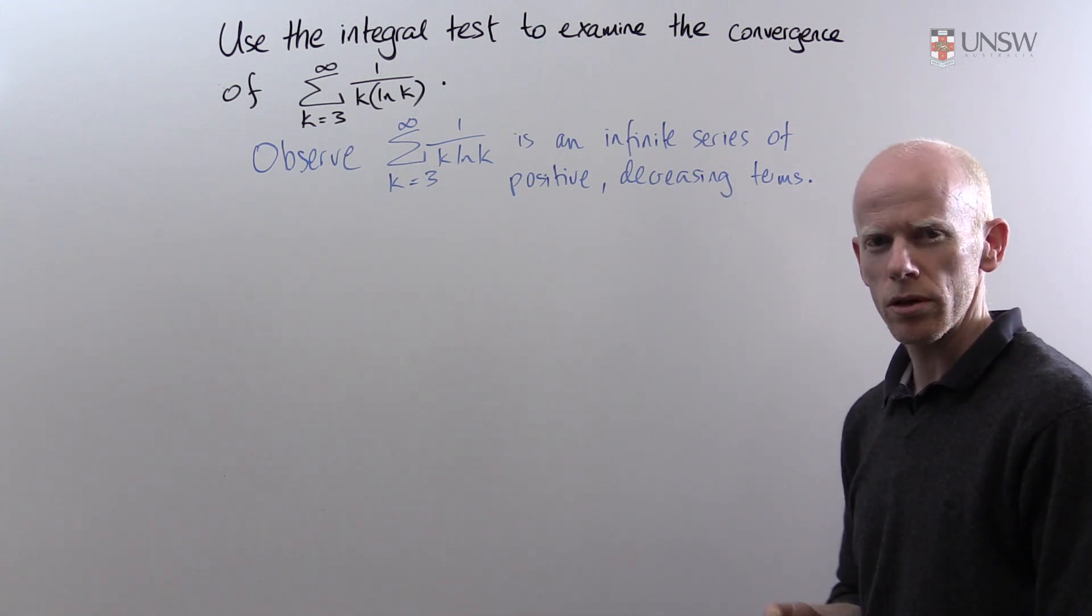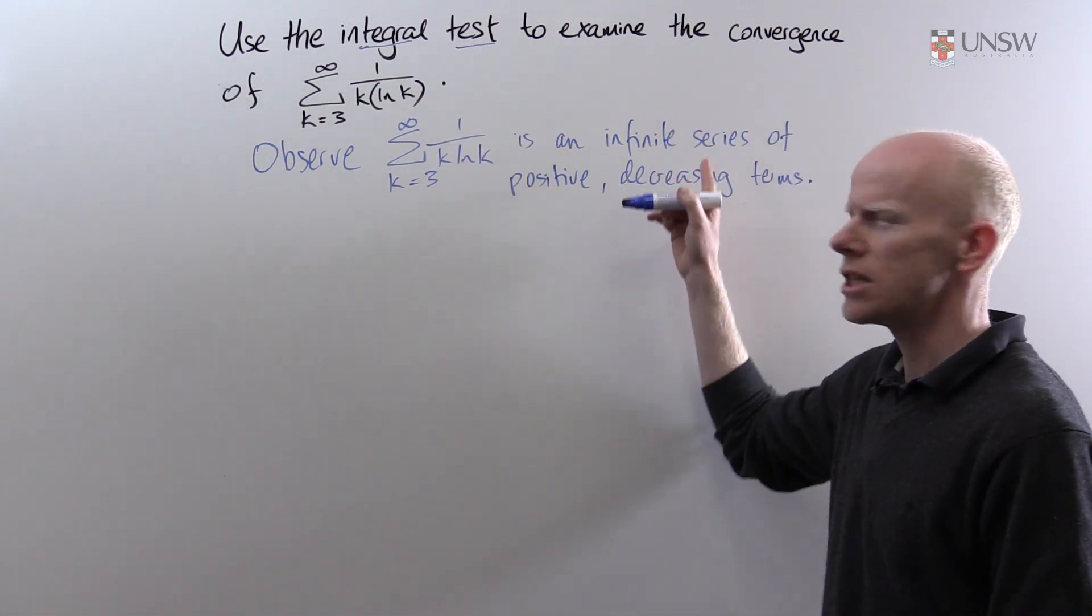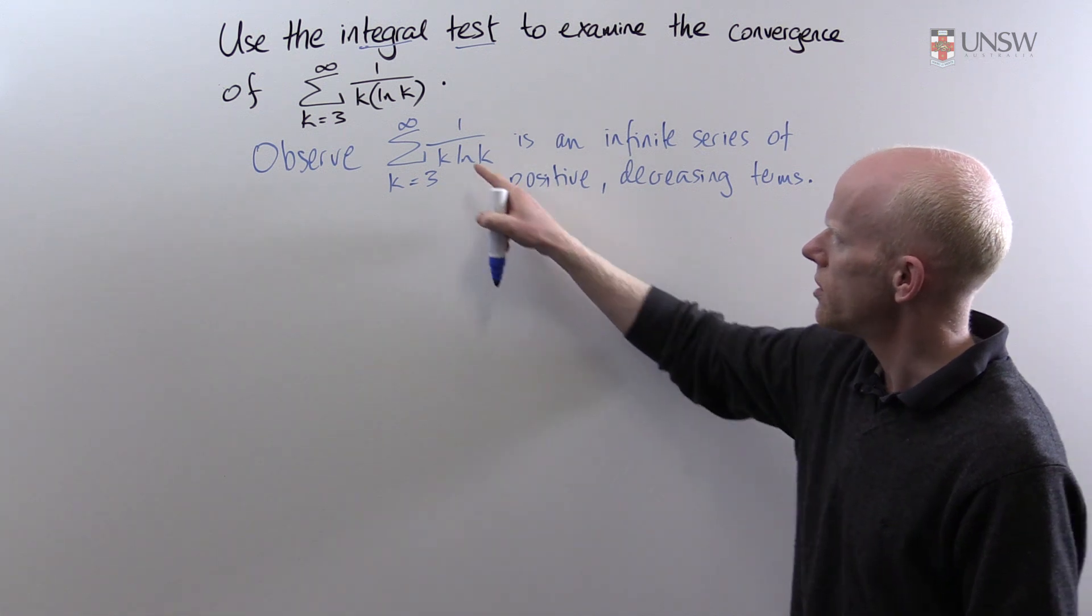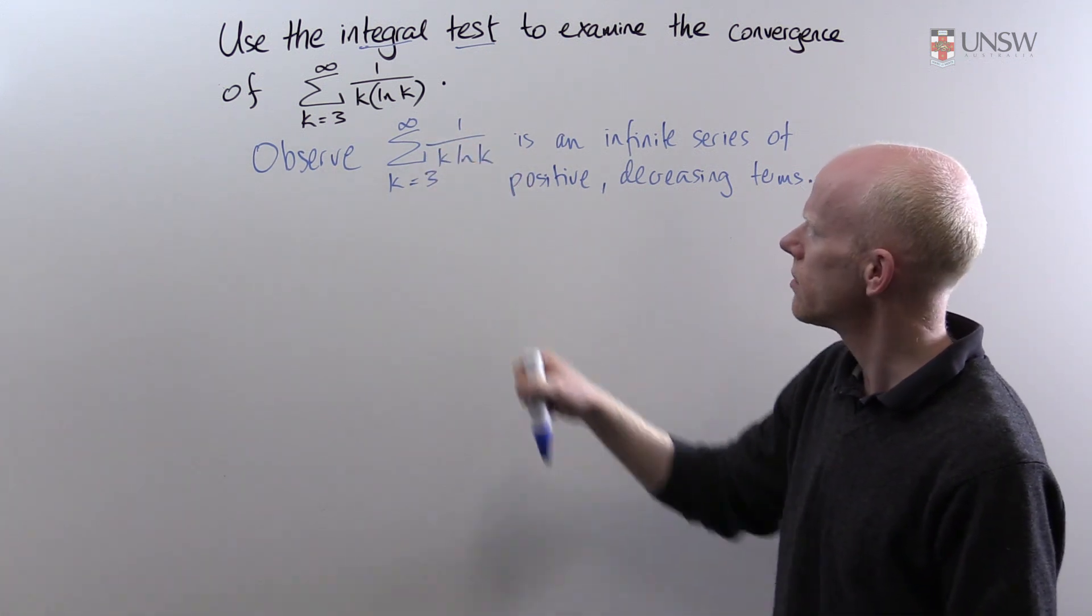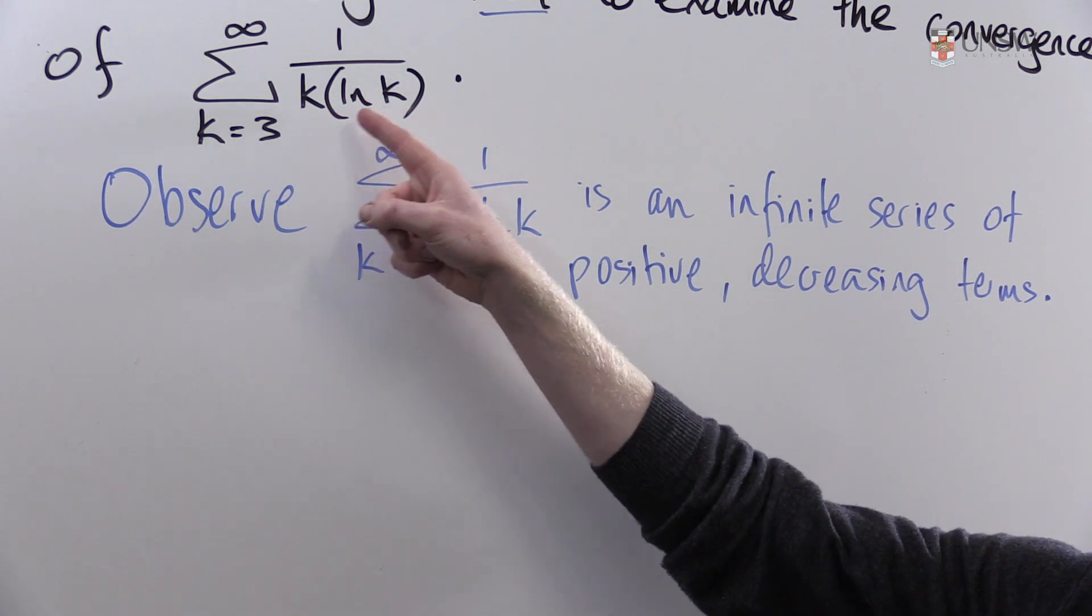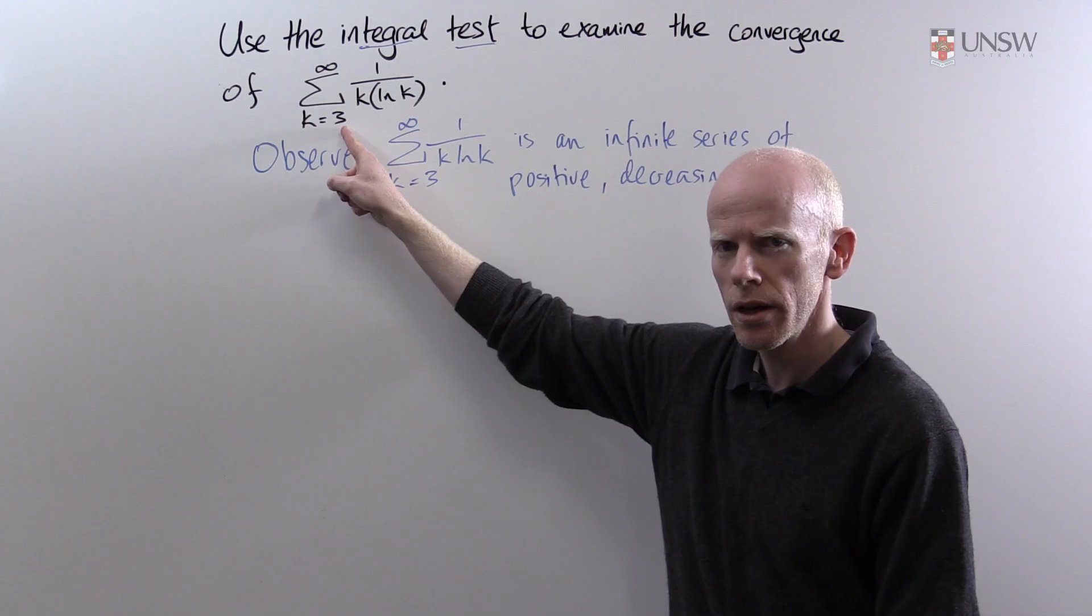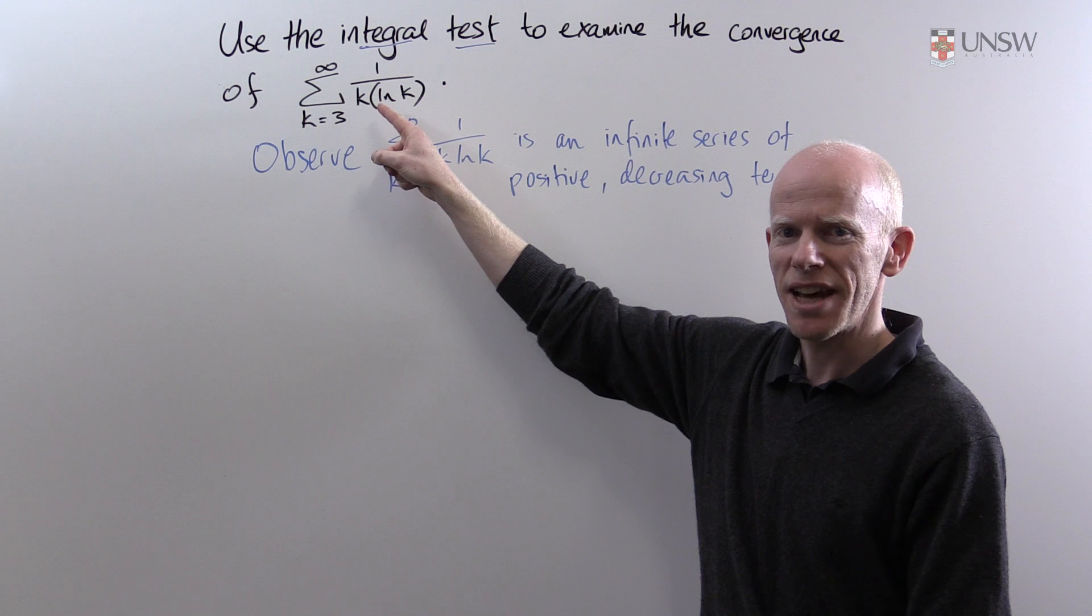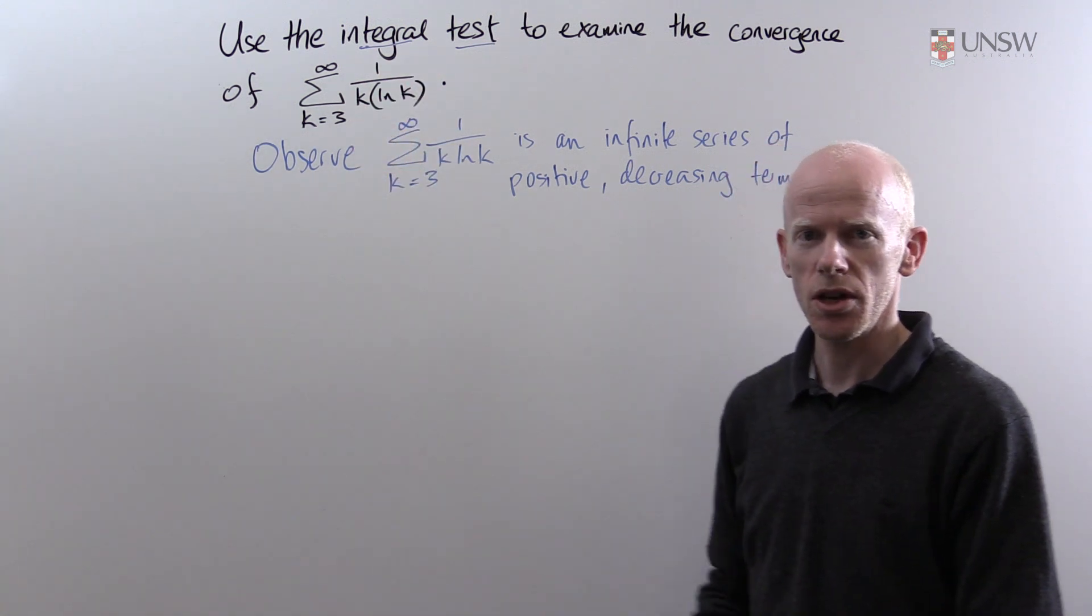This is extremely important because if we're going to use the integral test this condition must be satisfied. It's an infinite series because the upper limit of the sum is infinity. Because k log k is positive when k is larger than or equal to 3, then each of the terms is positive and as k increases then the term size decreases.